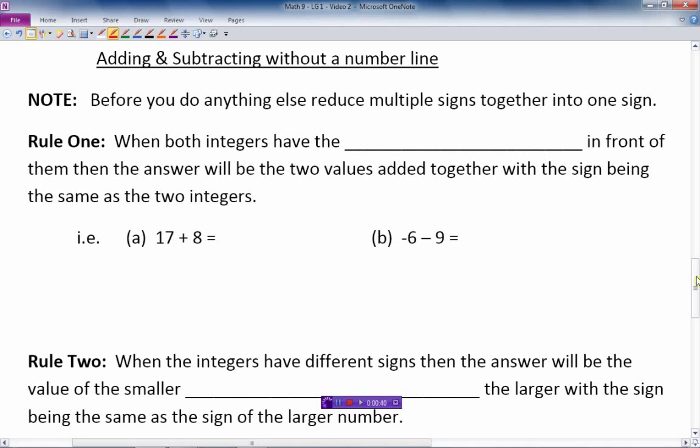So what that's talking about, right at the top here, if we just put something like 17 minus negative 10, what happens here is I've got two signs, and they're together in the middle between the two numbers. If I have signs that are together between the two numbers, I need to reduce them to one sign.